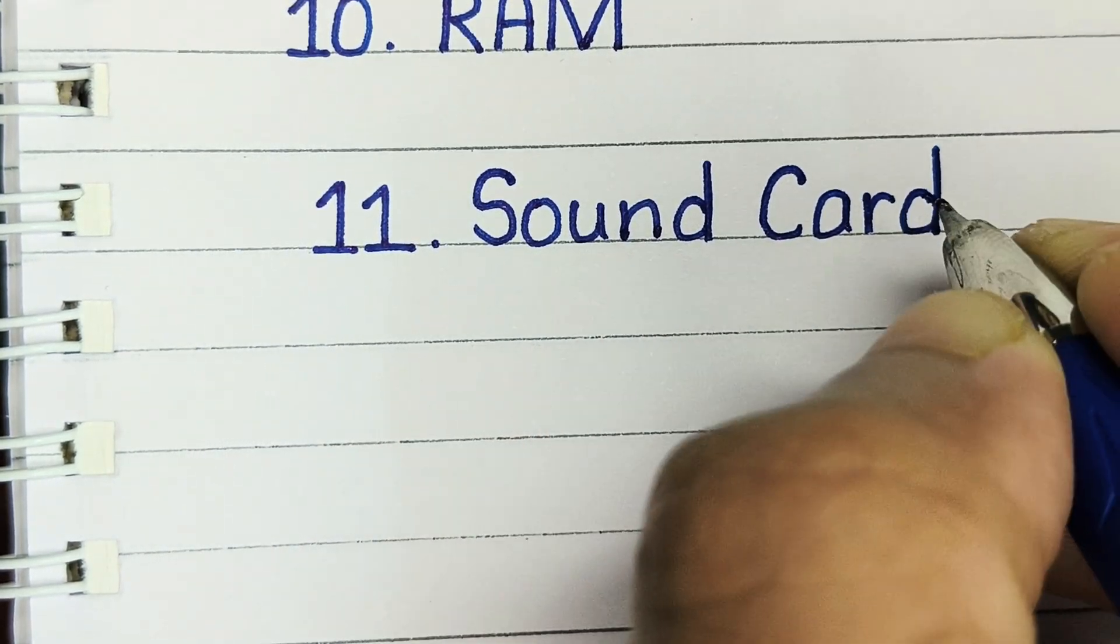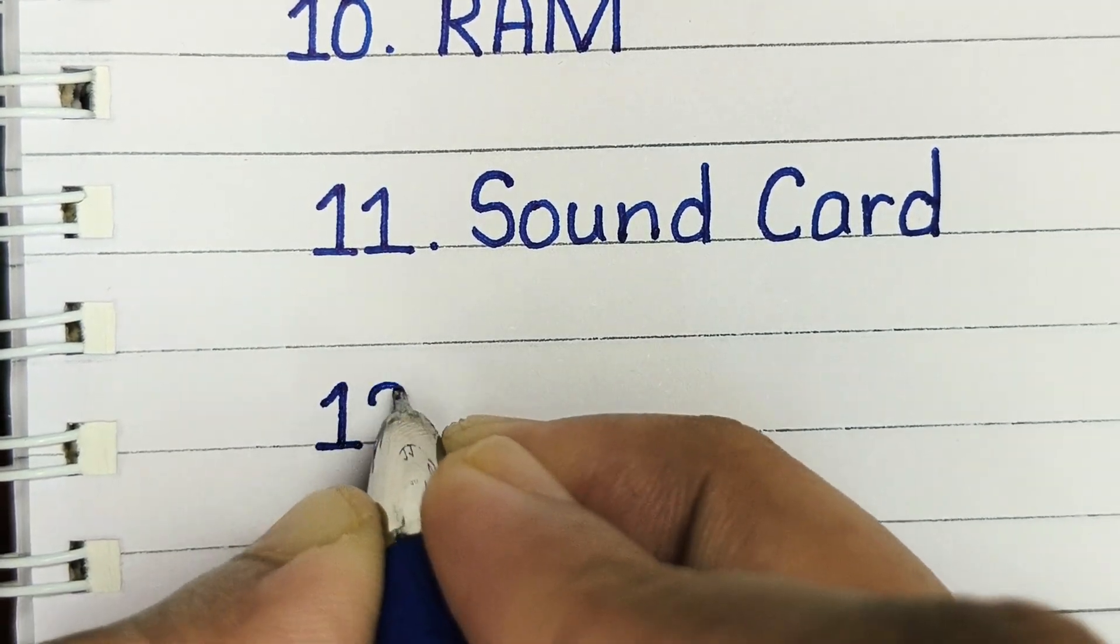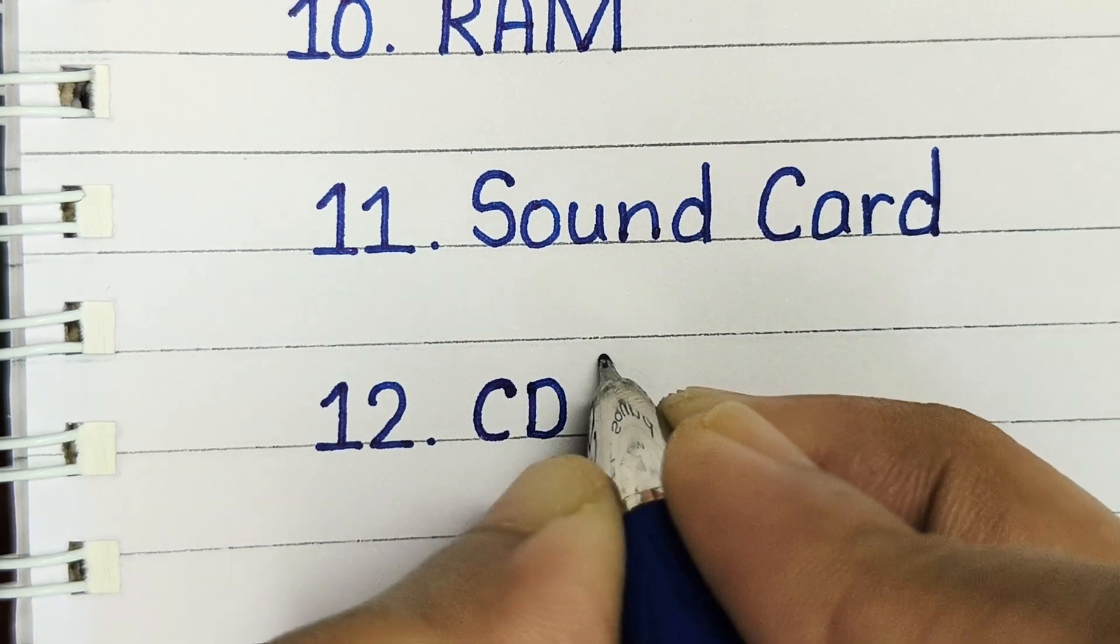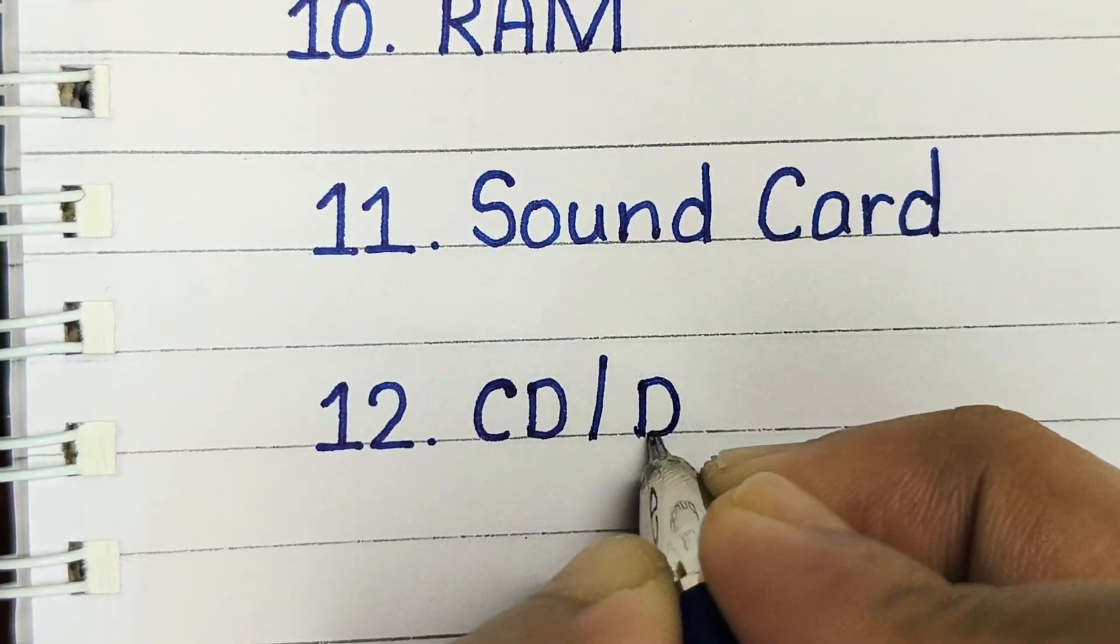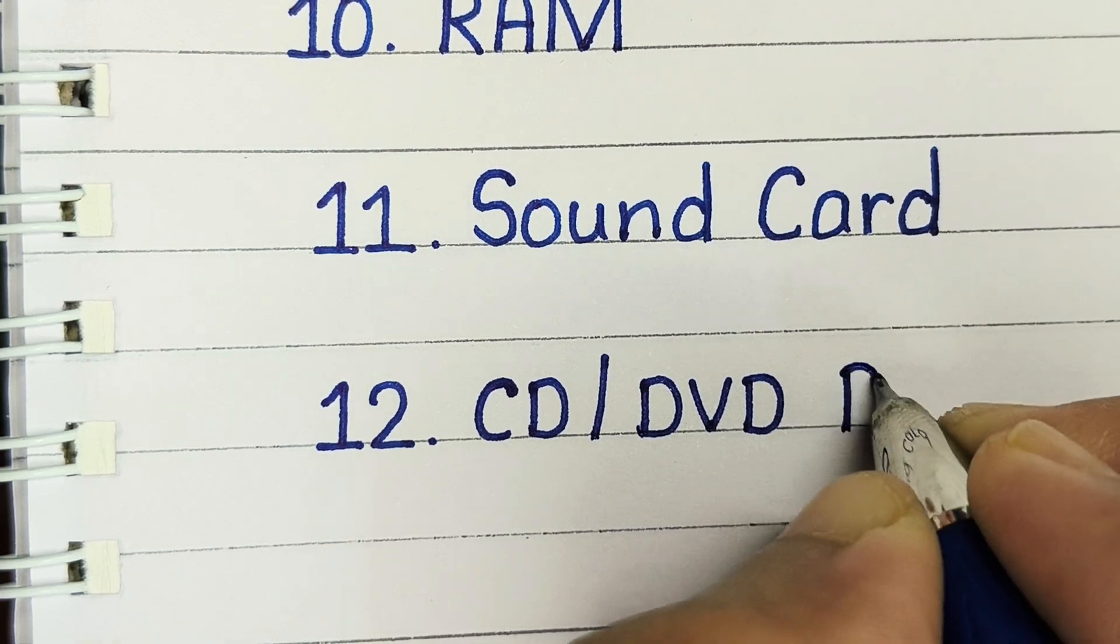Number eleven: sound card. Number twelve: CD or DVD drive.